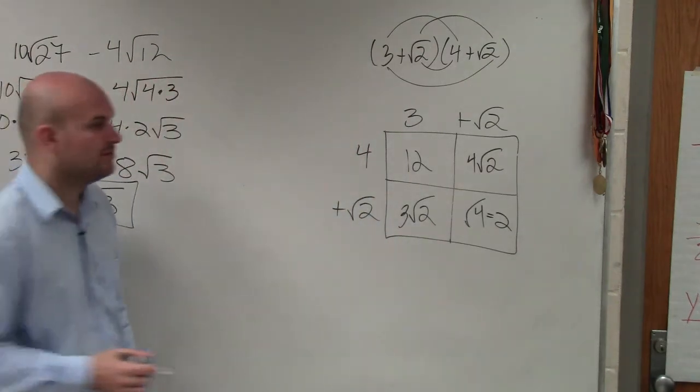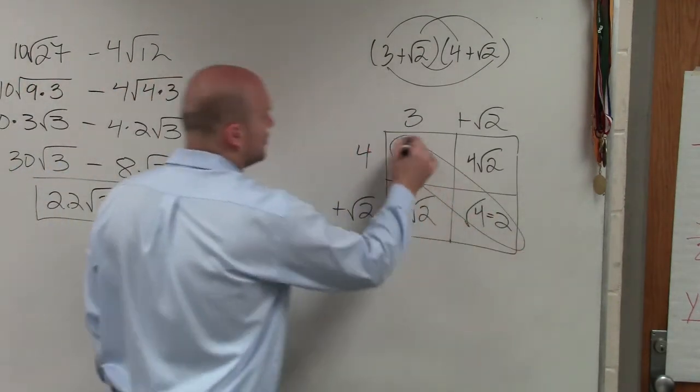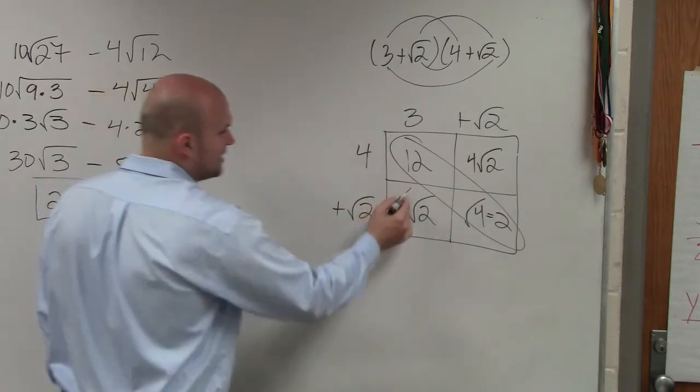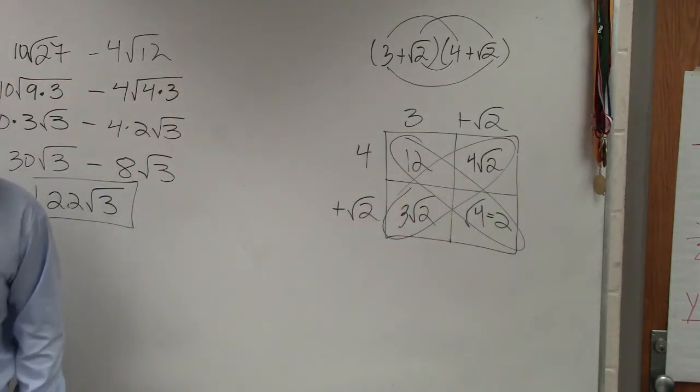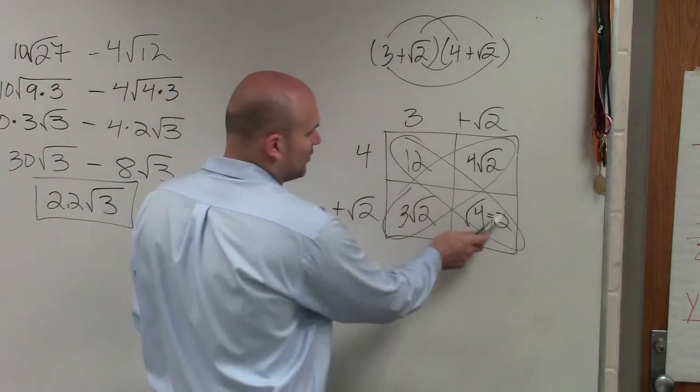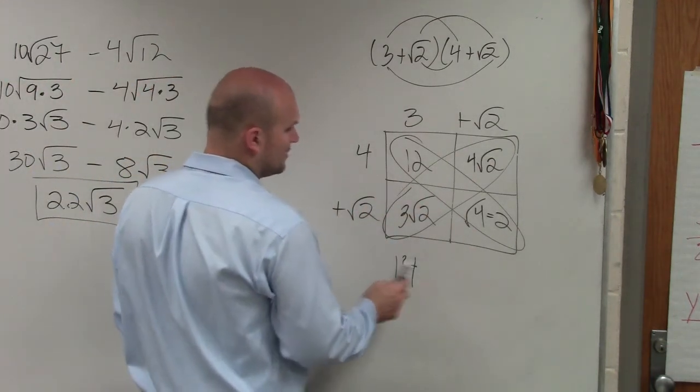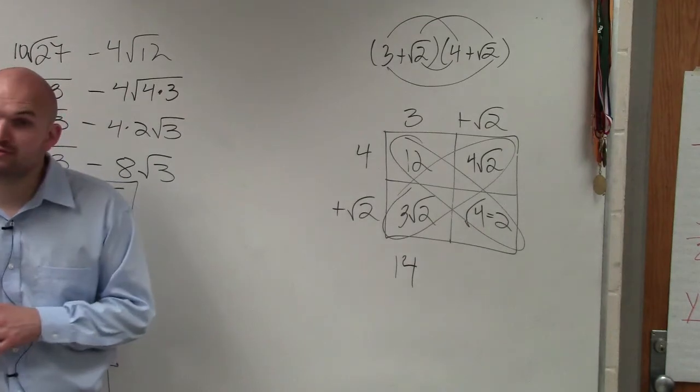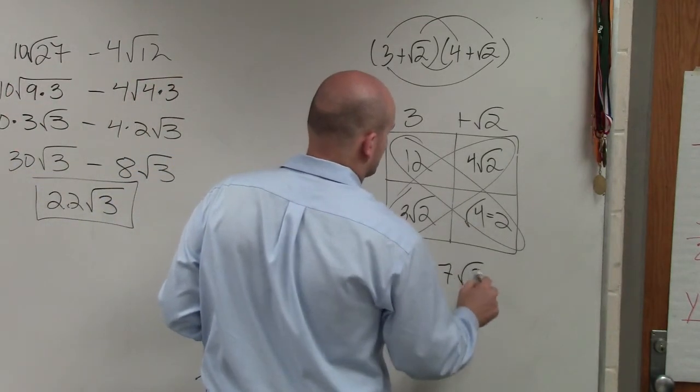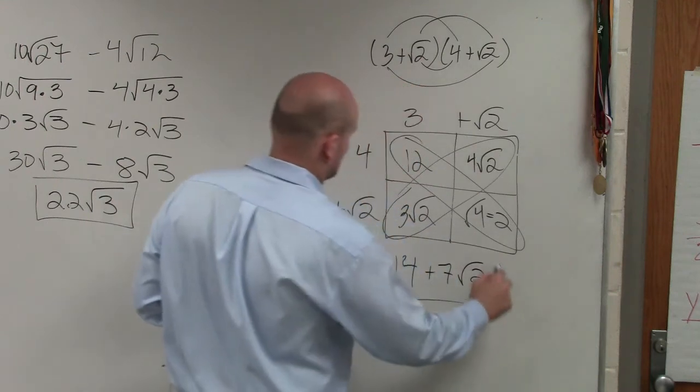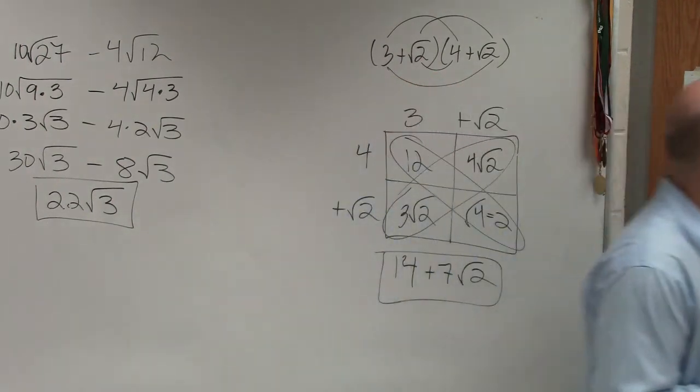So now what we can see is these are both numbers. I can combine these. And these are both the square root of 2. So I can add those together. So my final answer is 12 plus 2, which is 14. And then 3 square root of 2 plus 4 square root of 2 is 7 square root of 2. And that's it.